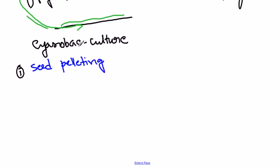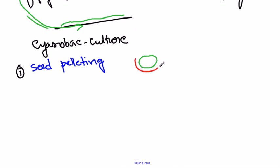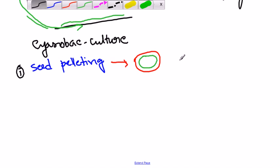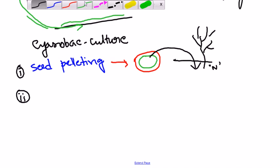In seed pelleting, we cover a seed with the cyanobacterial mass — the seed is coated with our cyanobacterial culture. These coated or pelleted seeds are then planted into the soil. When the seed is implanted, the cyanobacteria will fix an enormous amount of nitrogen in the surrounding soil, enriching it with nitrogen. That achieves our goal of biofertilization.